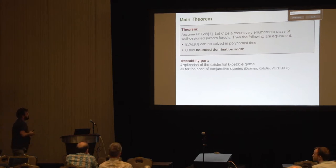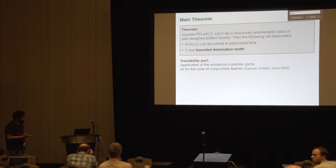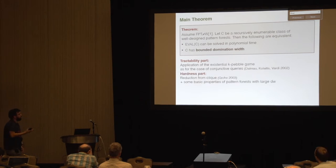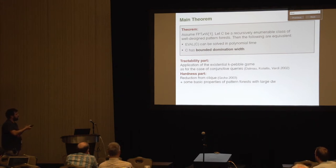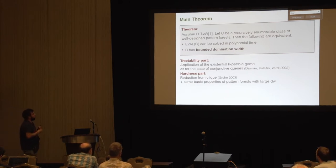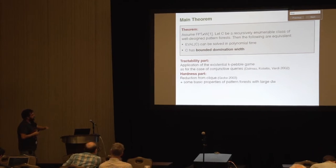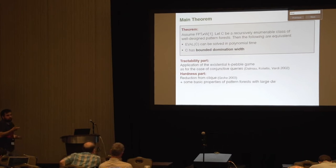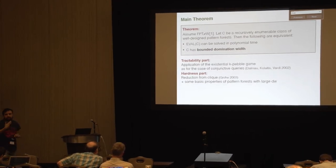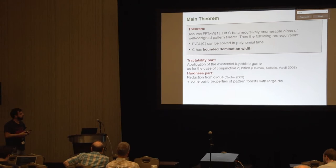In summary, the tractability part is again an application of the existential pebble game, and for the hardness part we apply a reduction from clique using basic properties of pattern forests with large domination width. The main theorem tells us that the key parameter in this case is tree width, just as in the case of conjunctive queries.